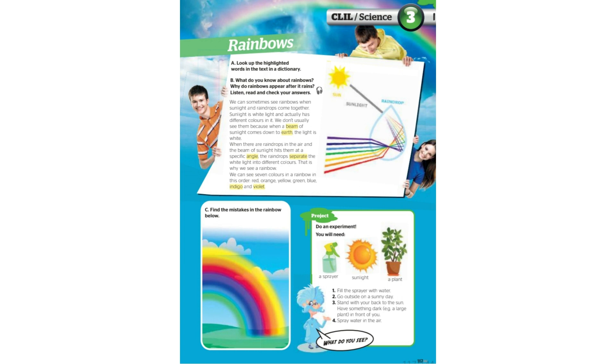We can see 7 colours in a rainbow in this order: Red, Orange, Yellow, Green, Blue, Indigo and Violet.